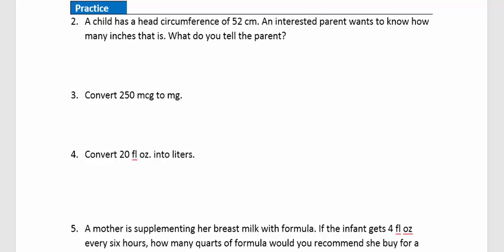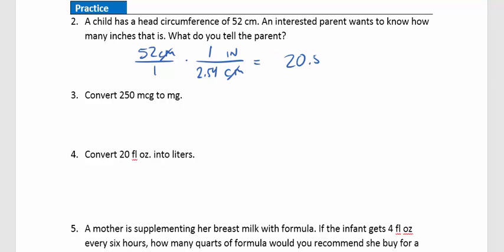Practice problem 2: A child has a head circumference of 52 centimeters. An interested parent wants to know how many inches that is. We write 52 centimeters as a fraction over one, then divide out centimeters and introduce inches. From our chart, 1 inch equals 2.54 centimeters. The centimeters divide out, so we take 52 divided by 2.54, which gives approximately 20.5 inches.